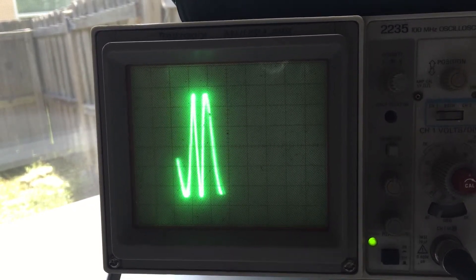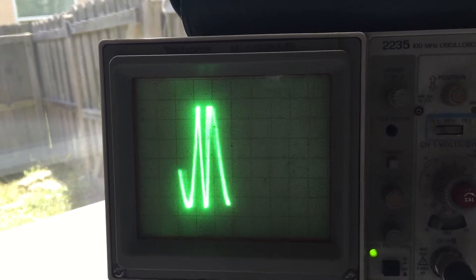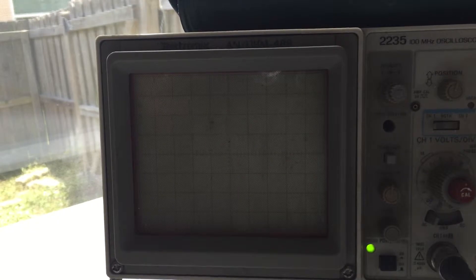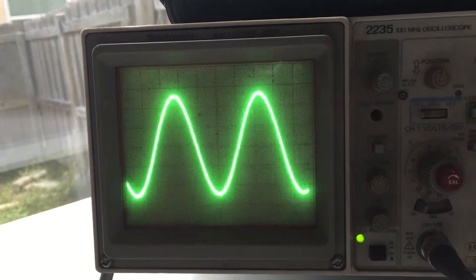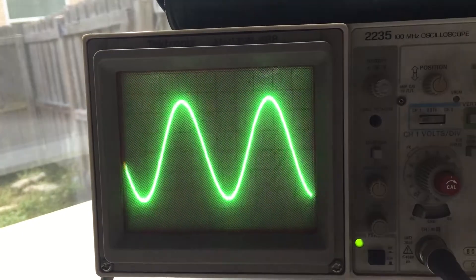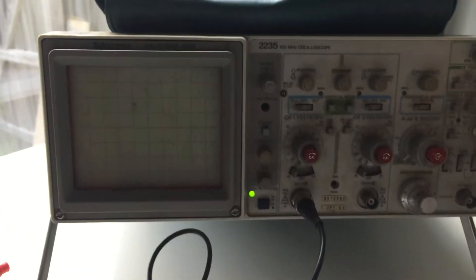And then the trigger level knob in normal triggered mode, if I turn it, it goes out. If I find the right spot, you can see, here we go. There's obviously a threshold with it where the triggering cuts out.